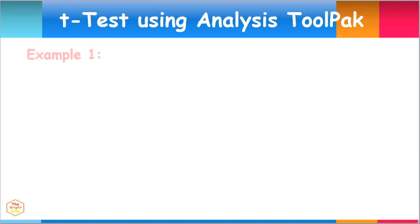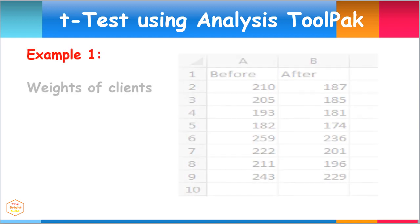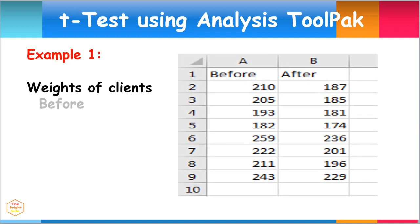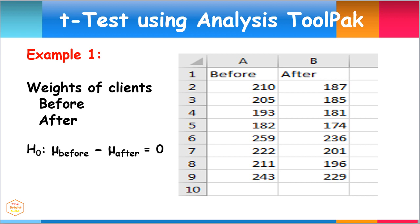For our specific example, we will use the data from weights of clients before the health program begins, and three months after. This analysis would determine whether the health program is effective. The null hypothesis states that the mean difference of the paired observations is equal to zero, while the alternate hypothesis says that the mean difference is not equal to zero.